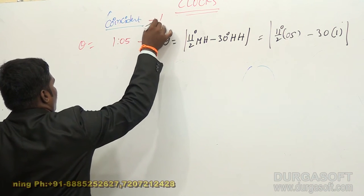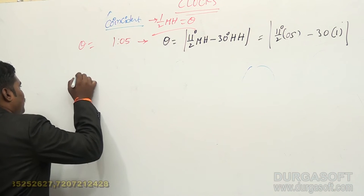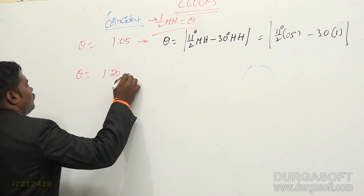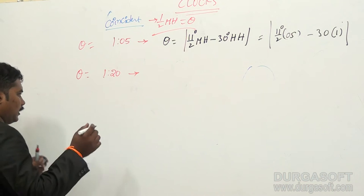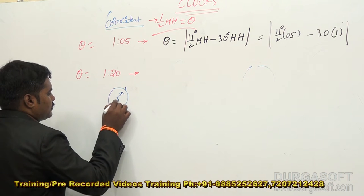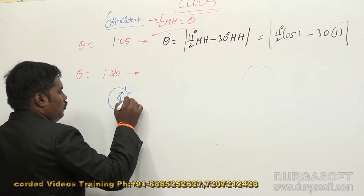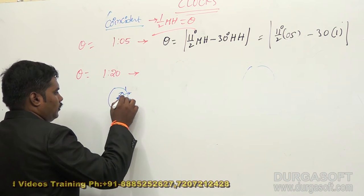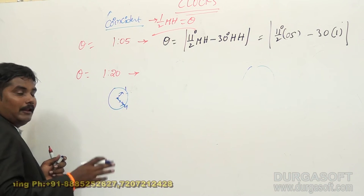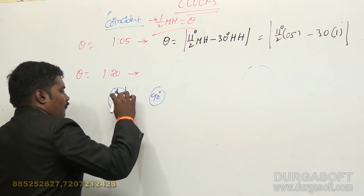For the coincident position, half of the minute hand directly equals theta. Now here is another example. When the time is 1:20, what is the angle? Make the diagram first. Here it is 1, here it is 4. This is the hour hand, this is the minute hand. In between 1 to 4, how many sectors? 4 minus 1 is 3 sectors. In each sector we have 30 degrees, so 3 into 30 — 90 degrees is the initial gap between 1 and 4.